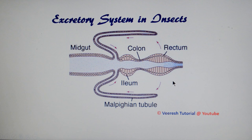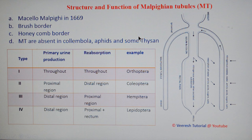The Malpighian tubule is the primary organ of excretion. It is a finger-like structure present at the junction of the midgut and hindgut, and lies freely in the hemolymph. The Malpighian tubule was discovered by Marcello Malpighi in 1669.